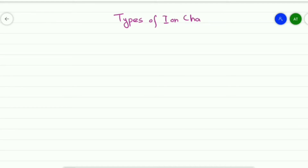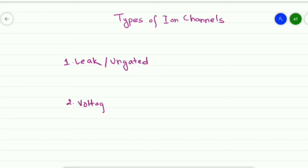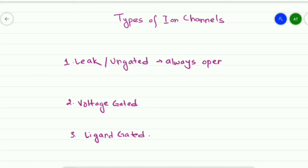Types of ion channels. There are three types of ion channels: leak channels, which are un-gated channels, voltage-gated channels, and ligand-gated channels. Leak channels are always open. They are responsible for maintenance of resting membrane potential.